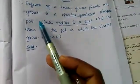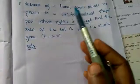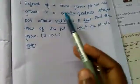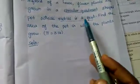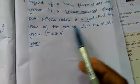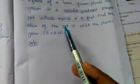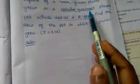Did you understand? In front of a house, flower plants are grown in a circular quadrant shaped pot whose radius is 2 feet. We want to find area of the part. Now what is the part shape? Circular quadrant shape. Did you understand?